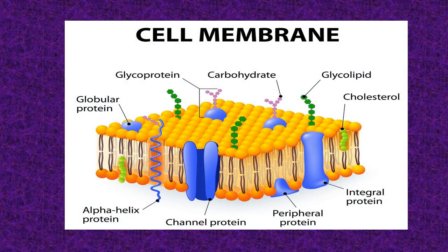Students, this is the structure of the cell membrane. Cell membrane is made up of a bilayer of phospholipids. There are two types of protein molecules that float in the fluid phospholipid layer: intrinsic protein or integral protein, which completely covers the lipid bilayer, and extrinsic protein or peripheral protein, which occurs either on the outer surface or on the inner surface of the lipid membrane.